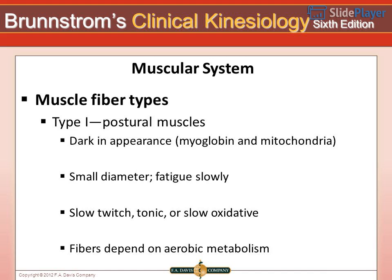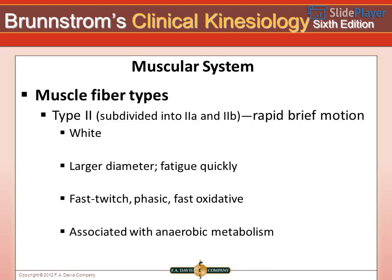Muscular System — Muscle Fiber Types, Type I: Type I fibers are postural muscles. They are dark in appearance due to myoglobin and mitochondria, have a small diameter, and fatigue slowly. They are also known as slow twitch, tonic, or slow oxidative fibers, and depend on aerobic metabolism.